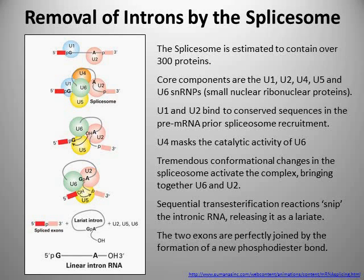I'm going to talk primarily about the core components of the spliceosome, which are the U1, U2, U4, U5, and U6 snRNPs — small nuclear ribonuclear proteins. It's very important that you realise that when I'm talking about U1, U2, U4, U5, and U6, I'm not talking about just protein; I'm talking about protein that's interacting with RNA. Each of these core components is similar to the ribosome, which is made of protein and RNA, and it's the RNA components of these snRNPs that's key to allowing them to function in the spliceosome.